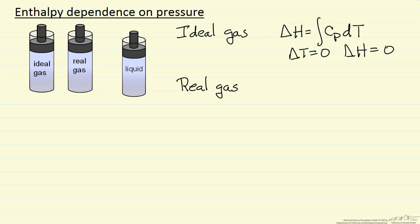Now I'll look at a real gas, and what I'm going to do is use steam at 500 degrees C. This is actually above the critical temperature, but what we want to show is dependence on pressure, so we might call this a fluid as opposed to a gas, but molecules clearly interact. Let me show you some values that I've taken out of the steam table.